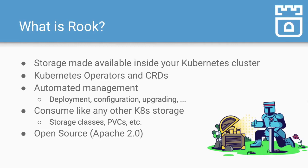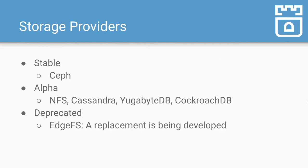Rook is open source with an Apache 2.0 license. We have several different storage providers in Rook at different levels of progression. Ceph is our stable storage provider — it's been in since the start of the project. Since then, we've added NFS, Cassandra, YugabyteDB, and CockroachDB. These are still in alpha and we're always looking for community involvement to help grow those. We do have one storage provider that is deprecated: EdgeFS. The owners of EdgeFS are working on a replacement for it.